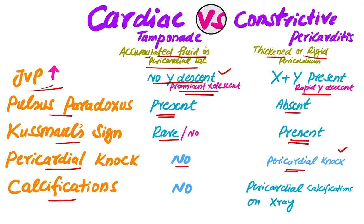Calcifications can be seen on chest X-ray in the pericardial region around the pericardium in constrictive pericarditis, but in cardiac tamponade there will be no calcifications on X-ray.